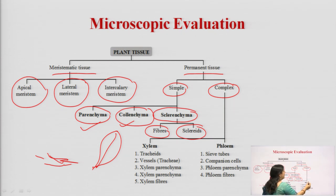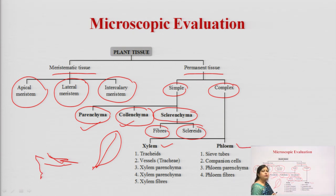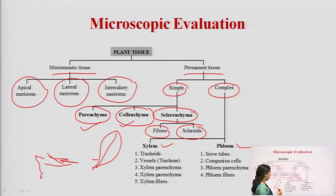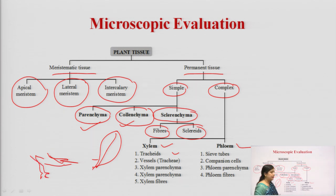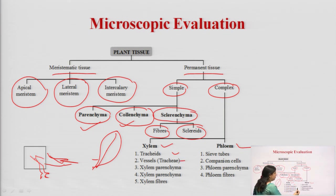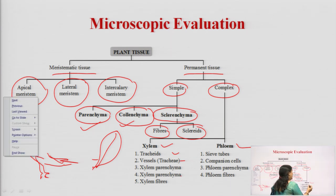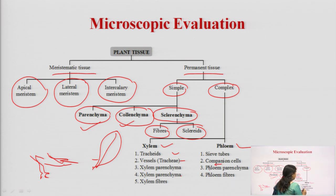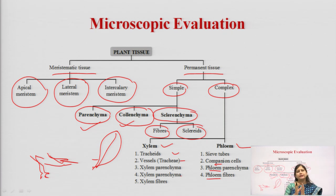Complex permanent tissues can be either xylem or phloem. Xylem is responsible for transport of water while phloem is responsible for transport of food. Xylem is not a single moiety — it has tracheids, vessels, xylem parenchyma, and xylem fibers. Phloem has sieve tubes, companion cells, phloem parenchyma, and phloem fibers. Together this bundle of cells forms the complex permanent tissues.